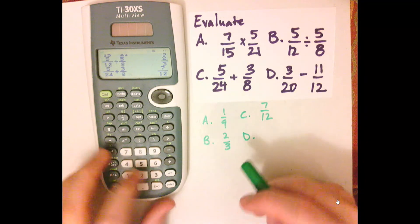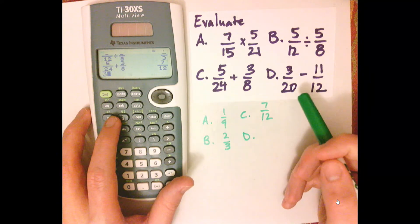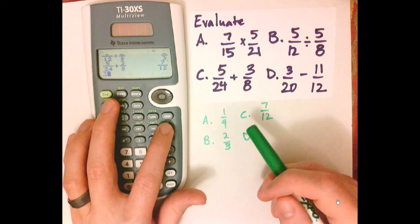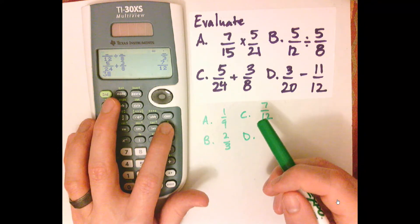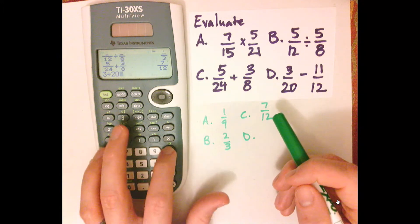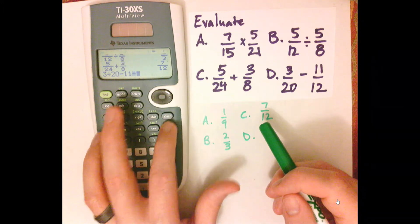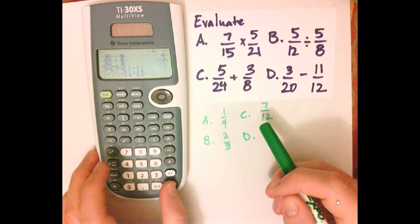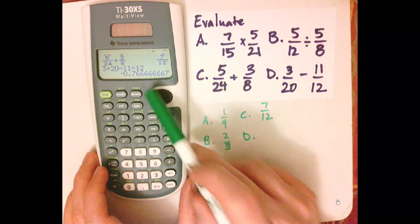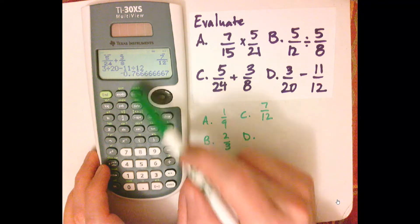Now what I could do is I could just put it as a division, so 3, divided by 20, minus 11, divided by 12. And notice it came out as a decimal, that's because I typed it in this way, as opposed to a fraction.